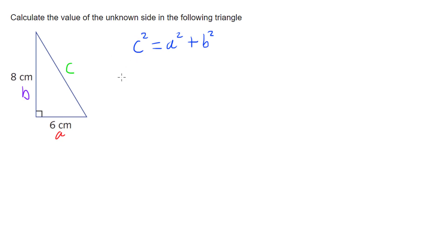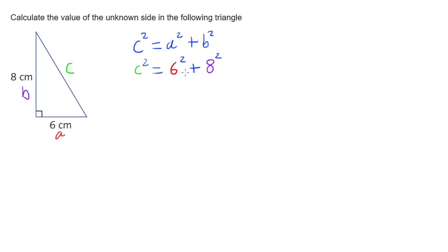So c² is the first thing. I don't know what c is, so I'm just going to fill in c² equals. I know what a is — a was this side down here, so a² is 6 squared. And b is this side over here, so I've got 8 squared. Now I can start working this out with the information filled in.